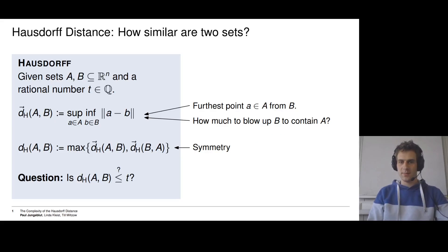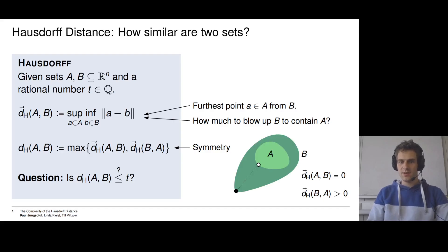So let's look at one example. We have two sets A and B and we see that A is a subset of B. So for every point a in A, there's a corresponding point in B just below it. So the directed Hausdorff distance between A and B is zero.